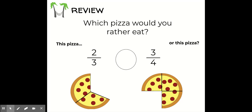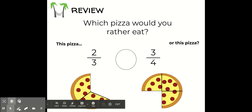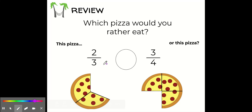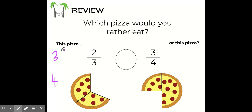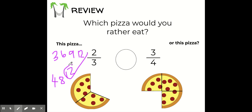Let's take a look back at the pizza question we talked about earlier. This involves comparing fractions, which is a skill we should know before we get into adding unlike fractions. To figure out which pizza was larger, I need to find a common denominator. I can do that by listing multiples of both denominators — multiples of three and multiples of four. Three, six, nine, twelve. For four: four, eight, twelve. I'll stop there because I see twelve in common.